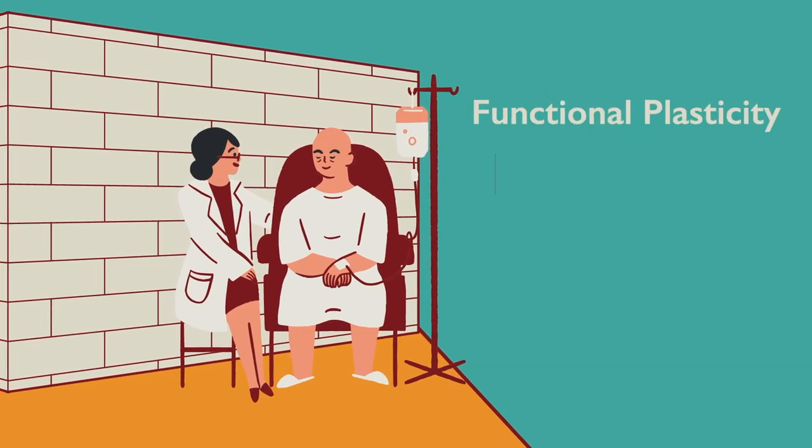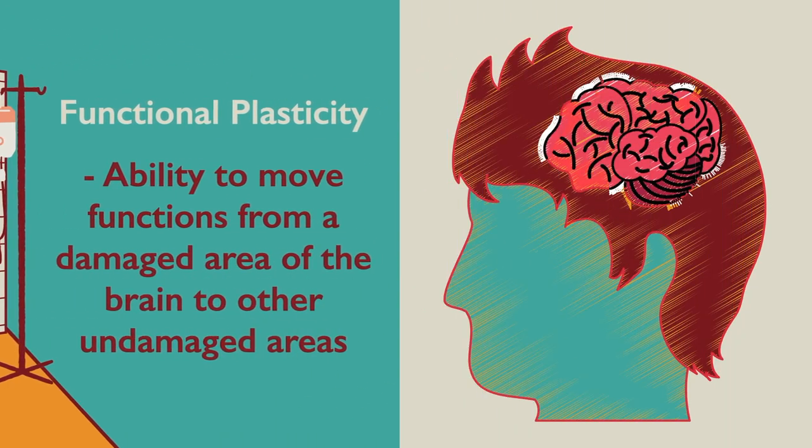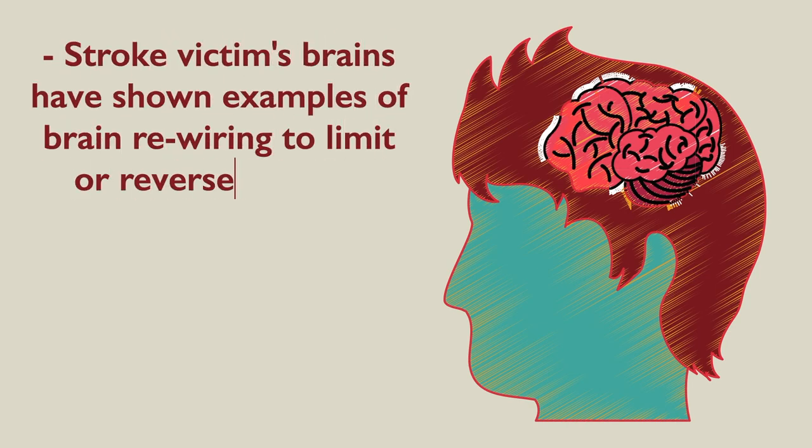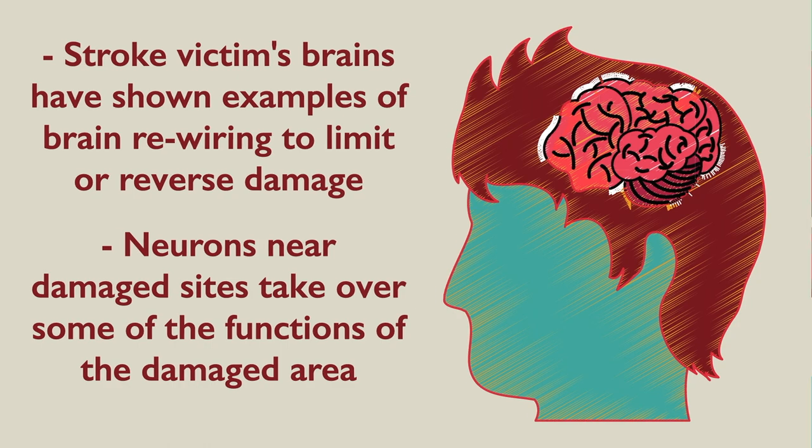Functional plasticity refers to the ability to move functions from a damaged area of the brain to other undamaged areas. Case studies of stroke victims who have experienced brain damage have shown that the brain can rewire itself, with neurons next to damaged brain sites taking over at least some of the functions that have been lost.